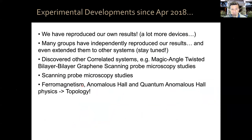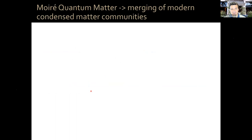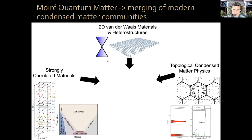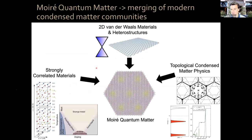Another very important development is the observation of ferromagnetism, anomalous Hall effect, and even the quantum anomalous Hall effect in these systems, which brings topology front and center to the investigation of moiré quantum matter. One of the nice things about this field is that it has meant the merging of several modern condensed matter physics communities: the 2D van der Waals materials community, strongly correlated materials community, and the topological condensed matter physics community. All of these come together in moiré quantum matter.